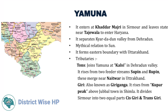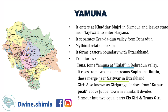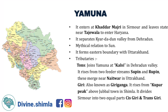Tones is the most important tributary of Yamuna. It joins Yamuna at Kalsi in Dehradun Valley. It rises from two feeder streams, Supin and Rupin, which merge near the mountain hamlet of Netwar in Uttarakhand, after which it is known as the Tones River. Giri, also known as Giri Ganga, rises from Cooper Peak just above Jubbal Town in Shimla, and divides Sirmaur into two equal parts — Sisgiri and Transgiri.